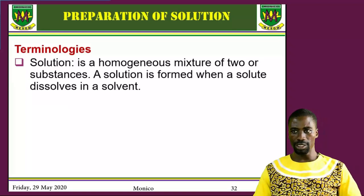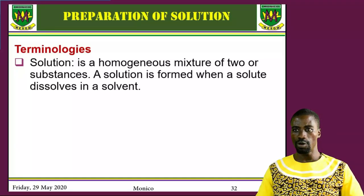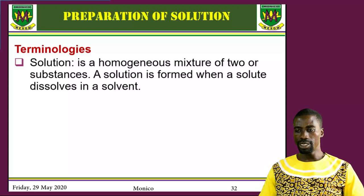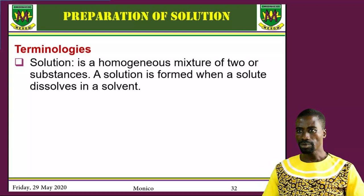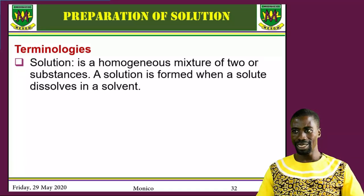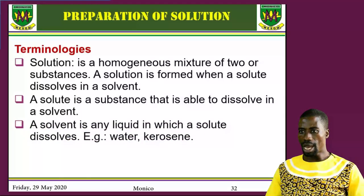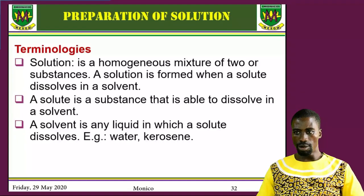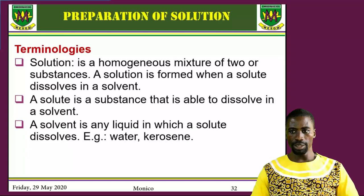When you have a solute dissolved in a solvent, the result is a solution. The sugar is the solute, and water is the solvent. A solute is a substance that is able to dissolve in a solvent, and the solvent is the liquid that dissolves the solute. Water and kerosene are examples of solvents — water dissolves most ionic compounds, while kerosene dissolves most covalent compounds.